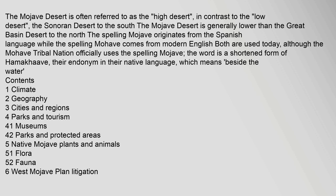The Mojave Desert is often referred to as the high desert, in contrast to the low desert — the Sonoran Desert to the south. The Mojave Desert is generally lower than the Great Basin Desert to the north. The spelling 'Mojave' originates from the Spanish language while the spelling 'Mojave' comes from modern English. Both are used today, although the Mojave tribal nation officially uses the spelling 'Mojave.' The word is a shortened form of 'Hamahab,' their endonym in their native language.